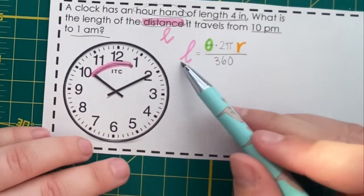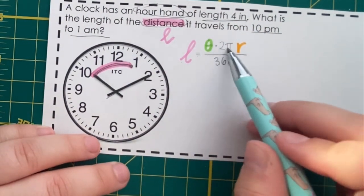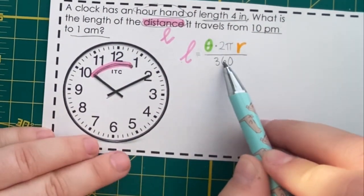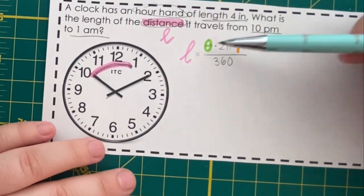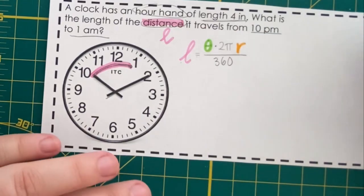We know from our last notes that L equals theta times 2 pi r over 360. We're going to use that formula here. We just need to figure out what these variables are.